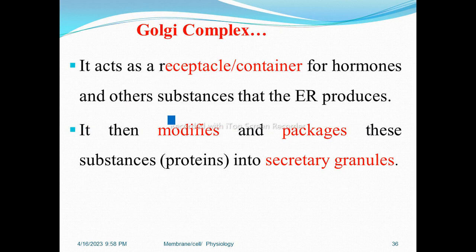The Golgi complex acts as a receptacle or container for hormones and other substances that the endoplasmic reticulum produces. It then modifies and packages these substances or proteins into secretory granules.